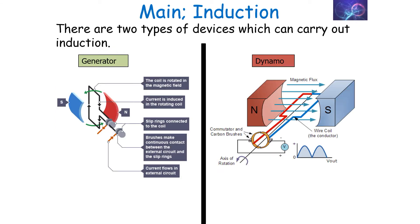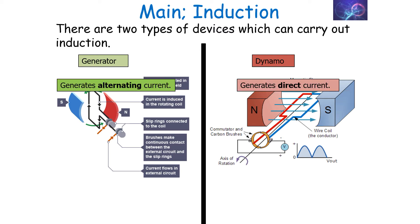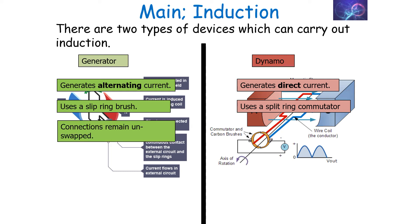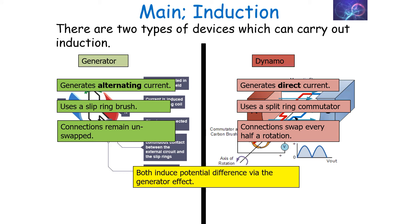Comparing the two devices: in a generator or alternator, you get alternating current; in a dynamo, you get direct current. In a generator or alternator, you use a slip ring brush; in a dynamo, you use a split ring commutator. In a generator, the connections remain unswapped, yet in a dynamo they swap every half a rotation. Both the generator and the dynamo induce potential difference via the generator effect.